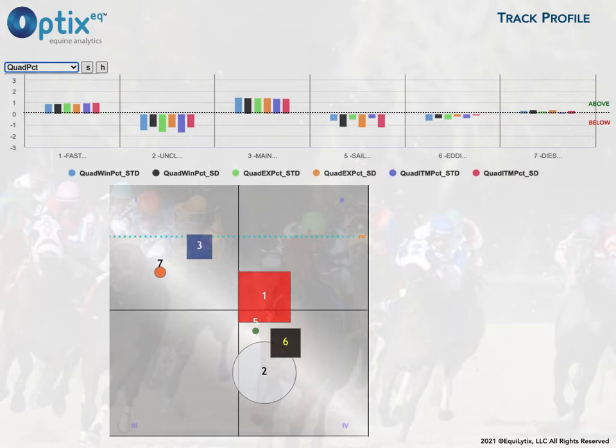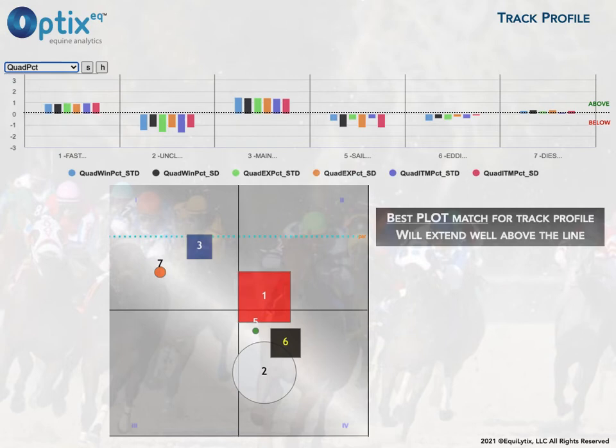The V-bars show positive statistics — those being all the ones above zero — and negative statistics below zero. Horses with bars that rise above zero have performed better in that category than other horses that are below zero. In our example, it's really quite obvious and very easy to see.